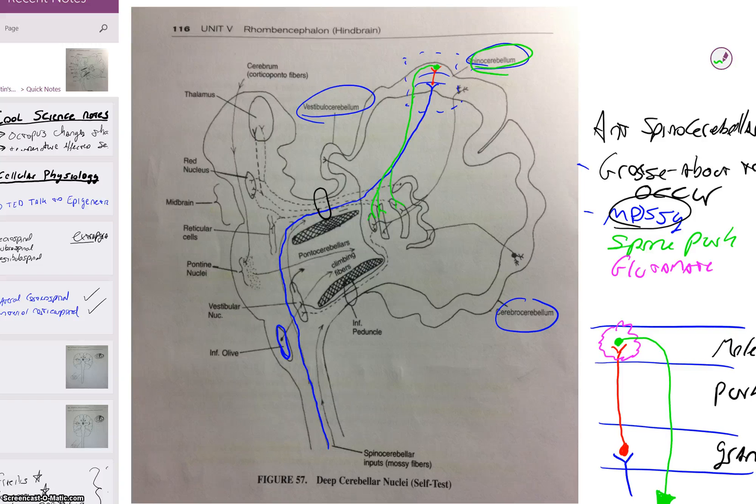Now once it gets to here, the spine Purkinje, it uses a different neurotransmitter. We're going to draw that here in pink. And that is the neurotransmitter GABA. GABA has an inhibitory effect on one of those three.